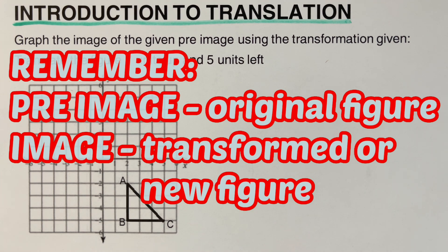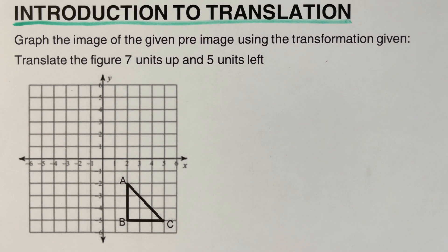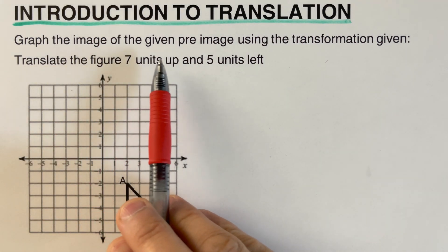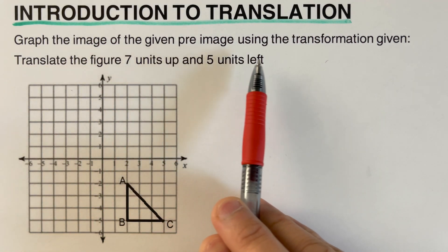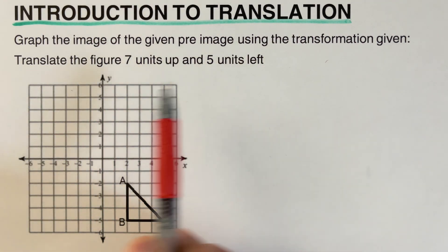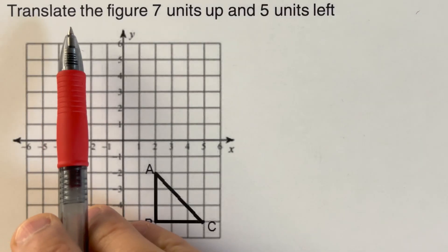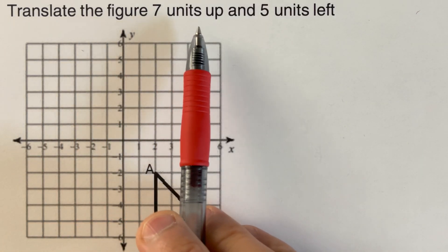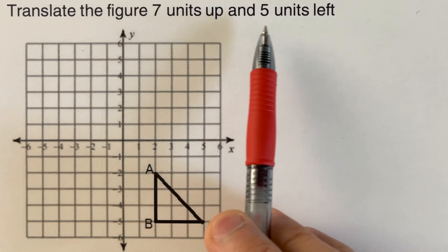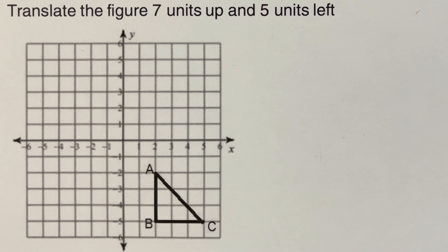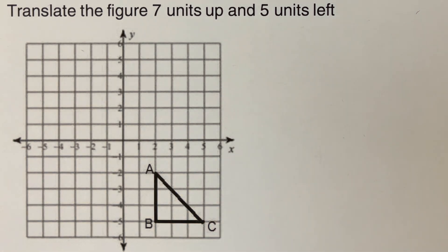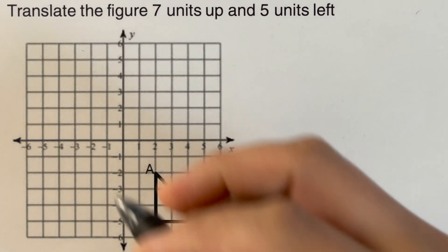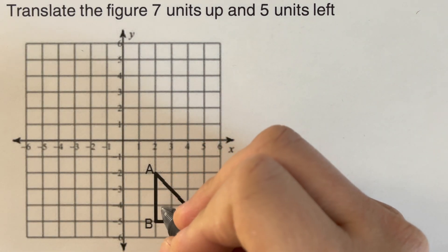So let's take this first example right here. Graph the image of the given pre-image using the transformation given. Translate the figure seven units up and five units left. So this original picture that we have here will be labeled as our pre-image.